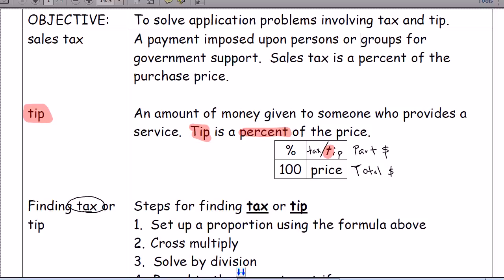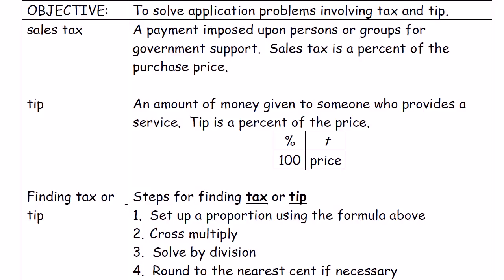Sales tax is a percent of the purchase price, and this percent of the purchase price goes to the government to support public services. That's why when you go to Walmart and buy anything, you pay taxes on it. Here are the steps: set up the proportion using the box, cross multiply, solve by division, and because we're talking about money, round to the nearest cent — the nearest hundredth.